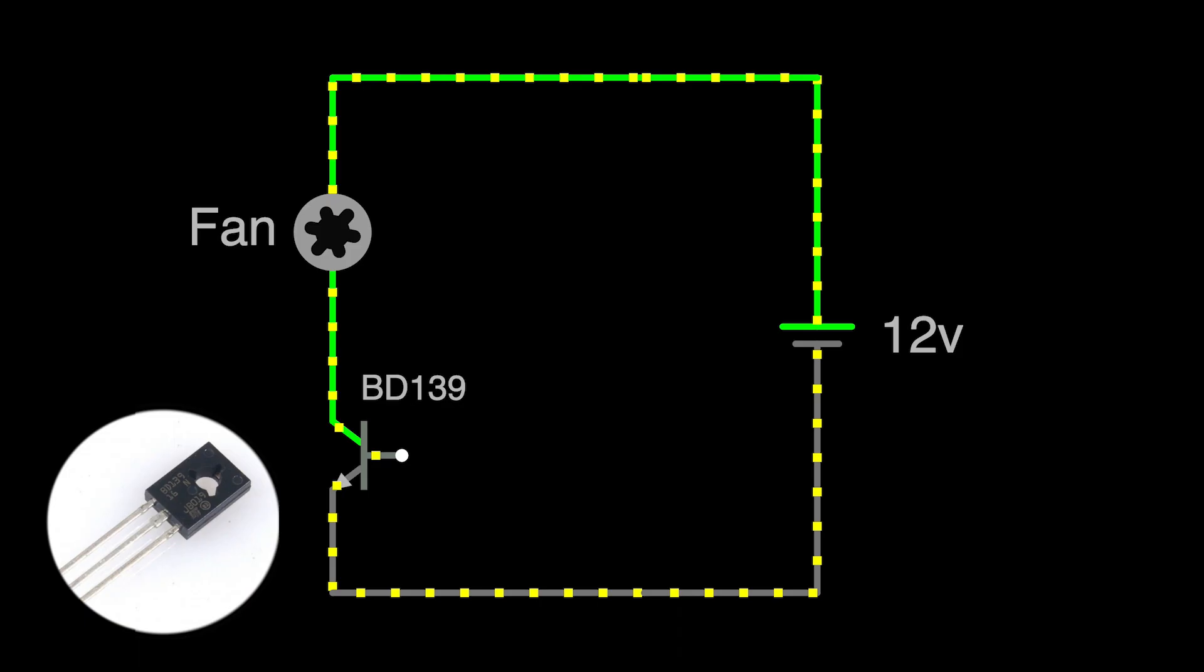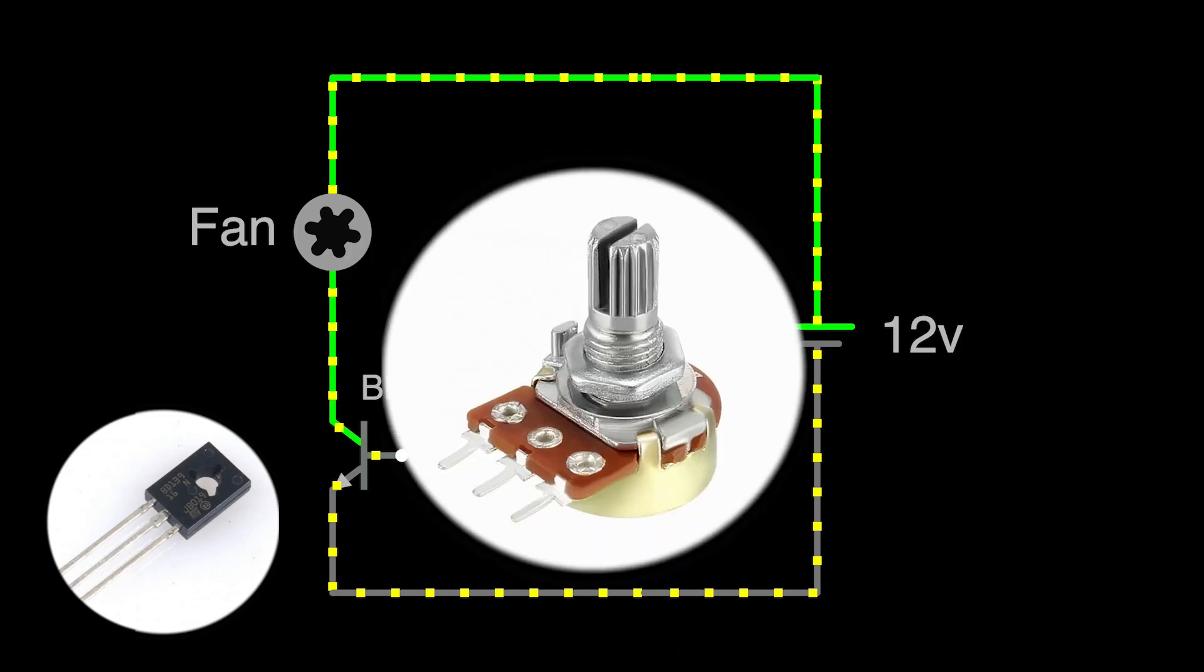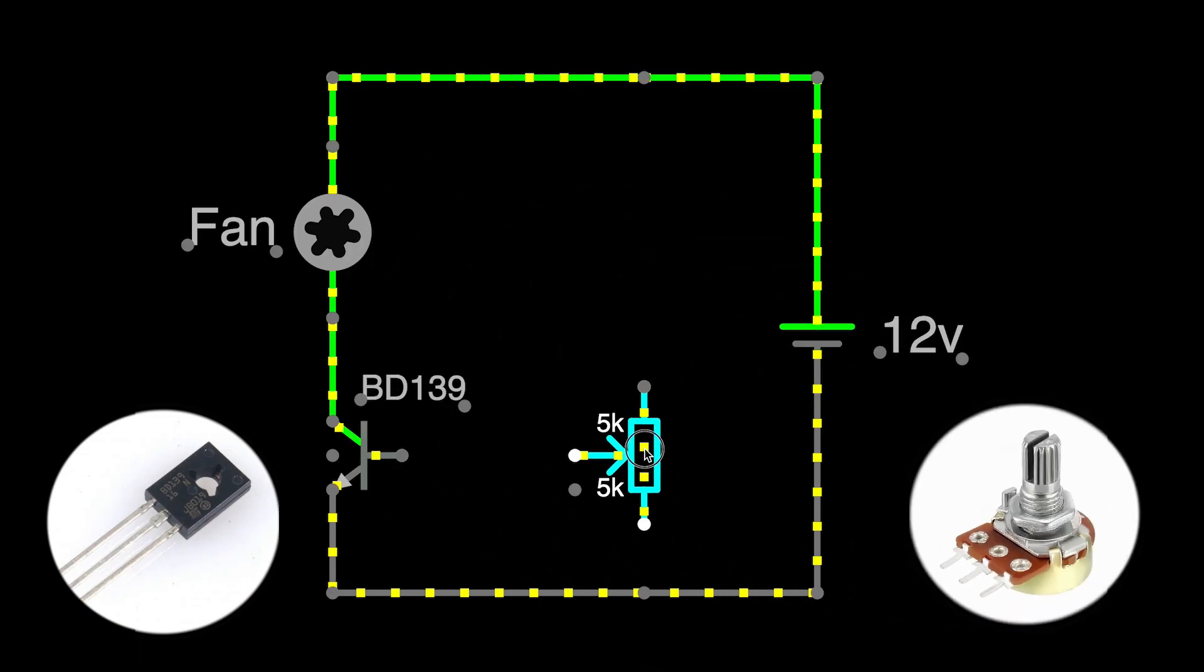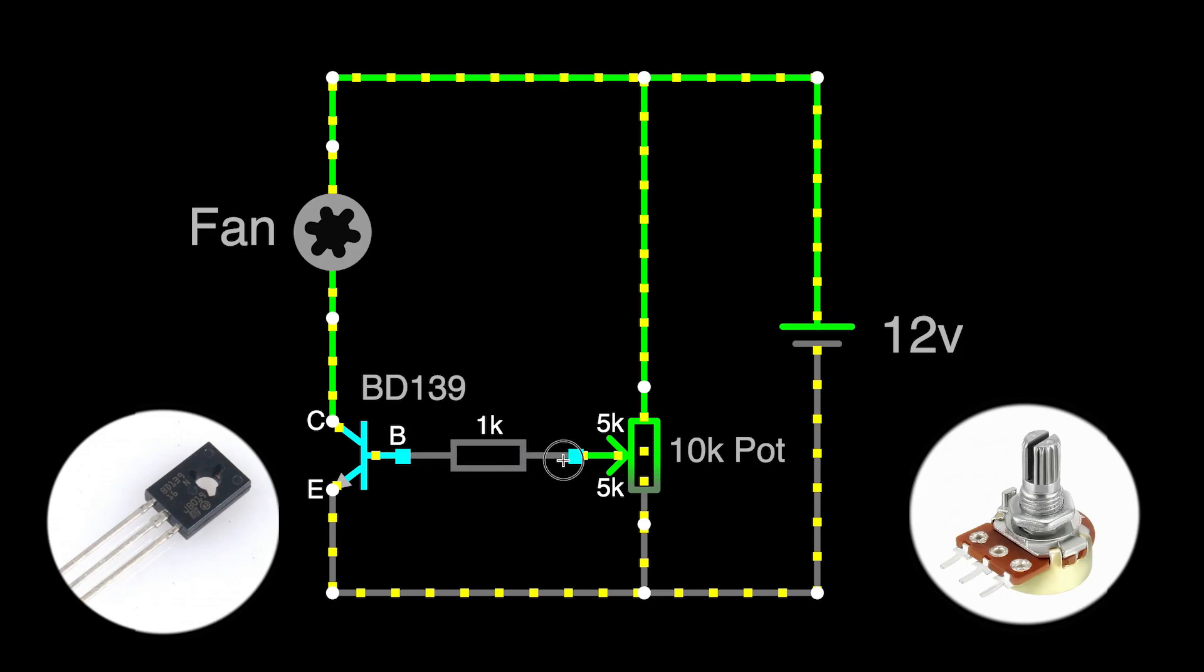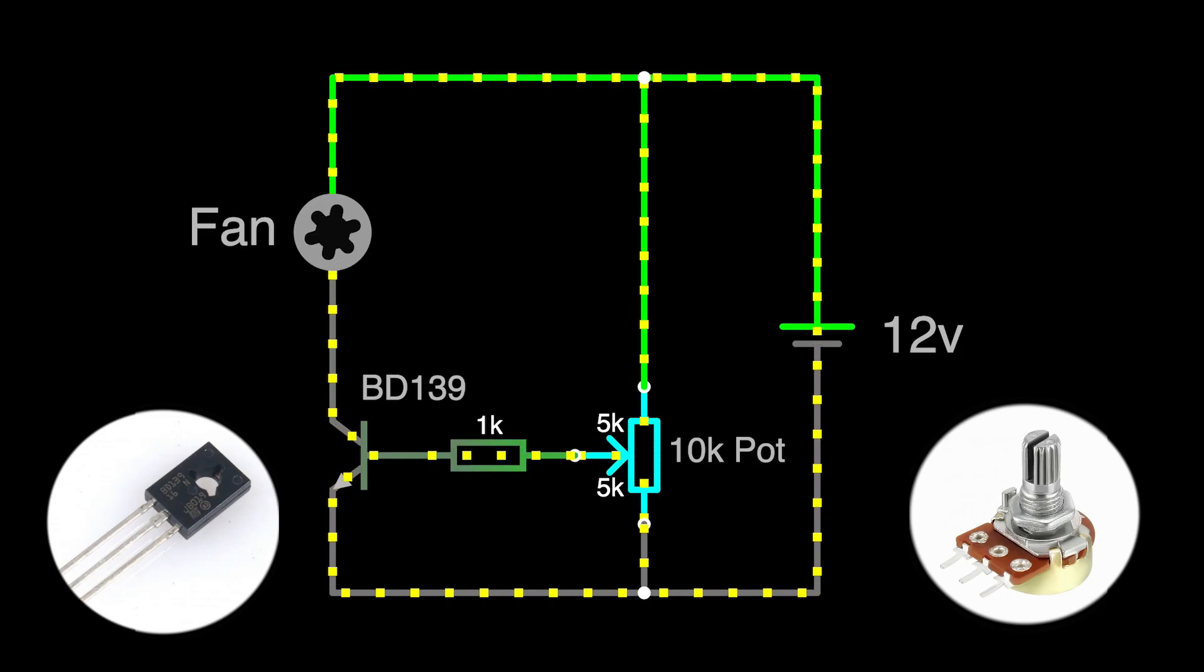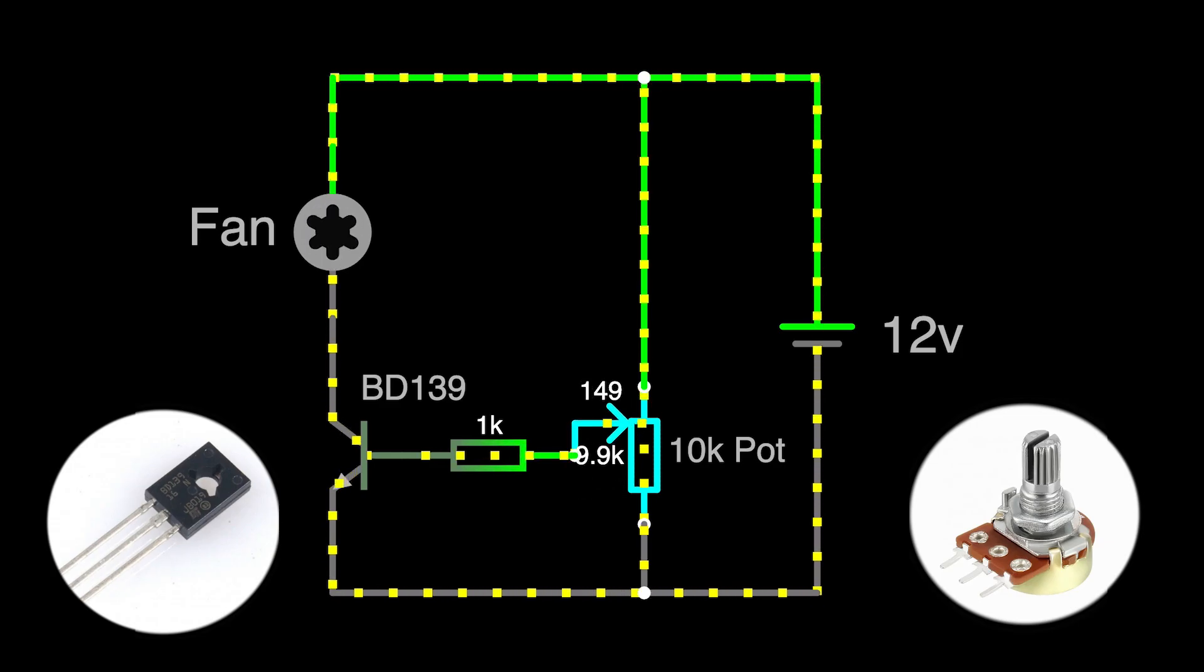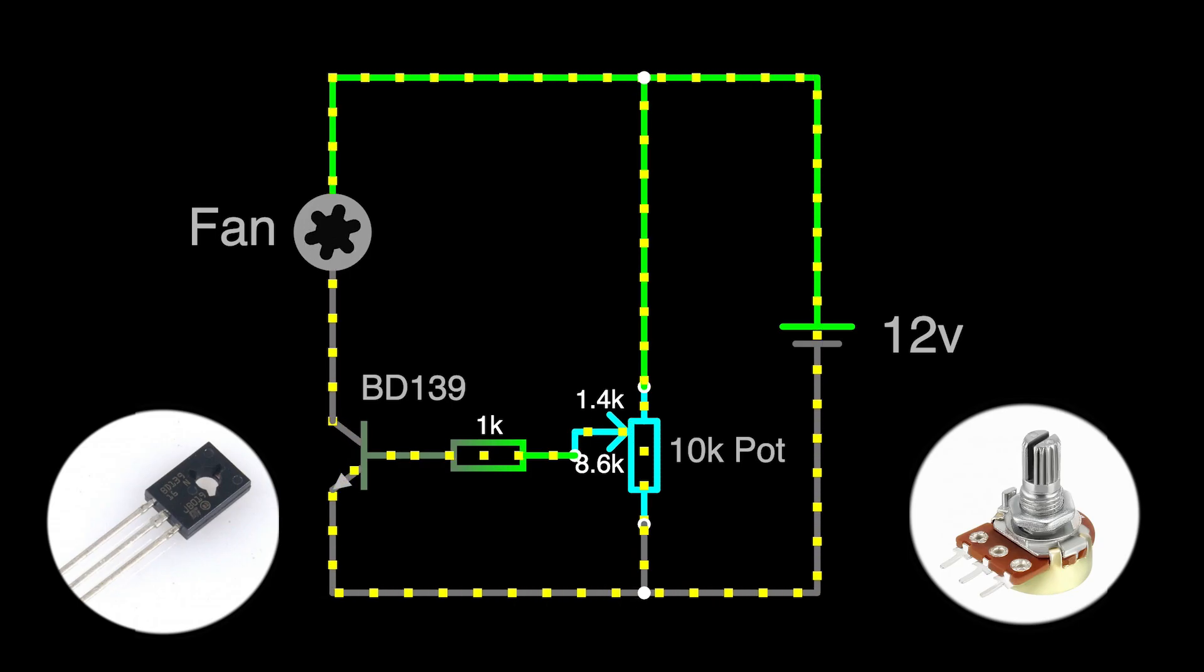So to do that we're going to put a potentiometer in the circuit like this. The middle pin of the potentiometer is called the wiper. As we turn the potentiometer the voltage of the wiper pin will change. We connect the wiper pin to the base of the transistor with the 1k resistor. Now when we turn the potentiometer the transistor lets more or less current through and the fan speed changes.